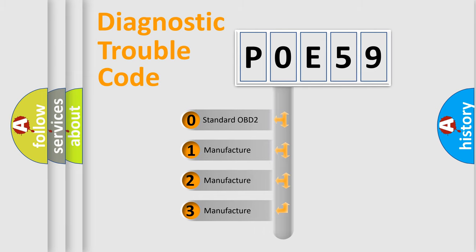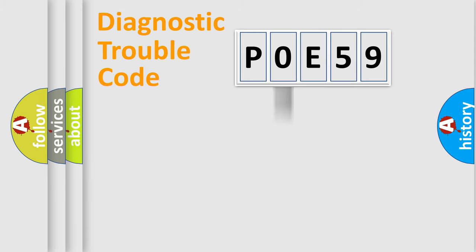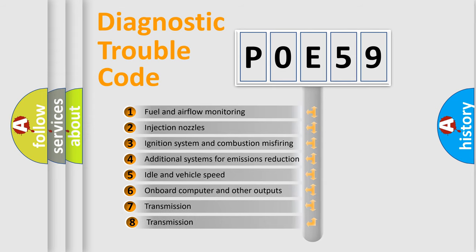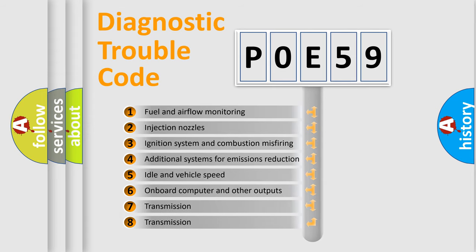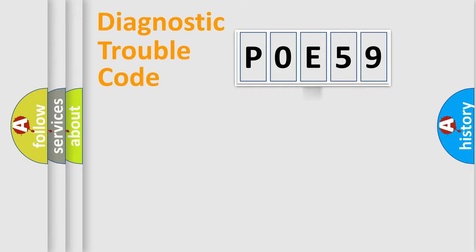If the second character is expressed as zero, it is a standardized error. In the case of numbers 1, 2, 3, it is a manufacturer-specific expression of the car-specific error. The third character specifies a subset of errors. The distribution shown is valid only for the standardized DTC code.